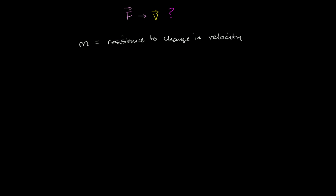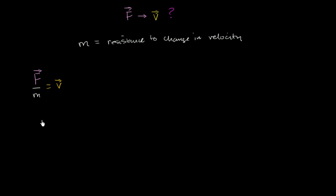One possibility is that for a given force, I can divide it by its resistance to a change in velocity. So if it has a high resistance to change in velocity, dividing by it will give me a low velocity. If I have a low resistance to change in velocity — dividing by a low number — that will give me a higher velocity. Also, the higher the force or the larger the magnitude of the force, the larger the magnitude of the velocity, and they'll actually go in the same direction. So that's one possibility.